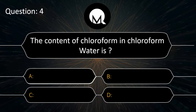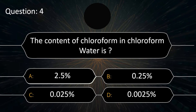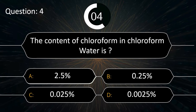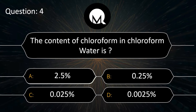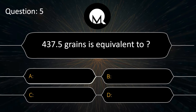The content of chloroform in chloroform water is: 2.5%, 0.25%, 0.025%, or 0.0025%. The answer is 0.25%.